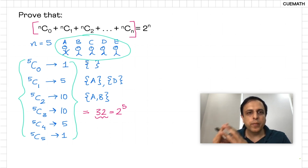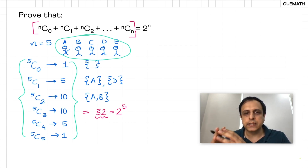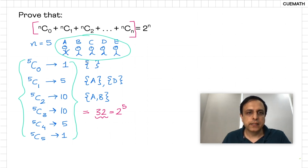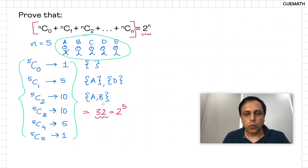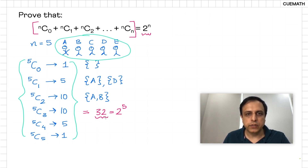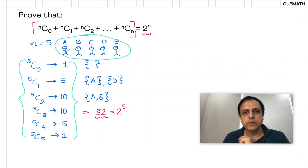So the number of subsets of any possible size that can be formed from a set of N objects is what the left side of the binomial identity is really counting. Now why should it be equal to 2 to the power N? In this case, why are we getting the value 32 or 2 to the power 5? For that, now comes the crux of the argument.